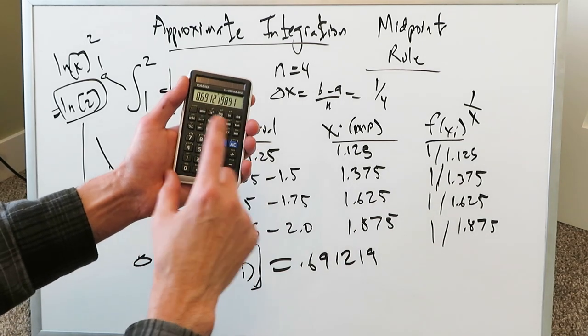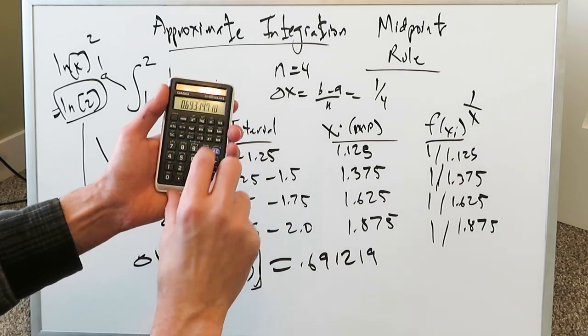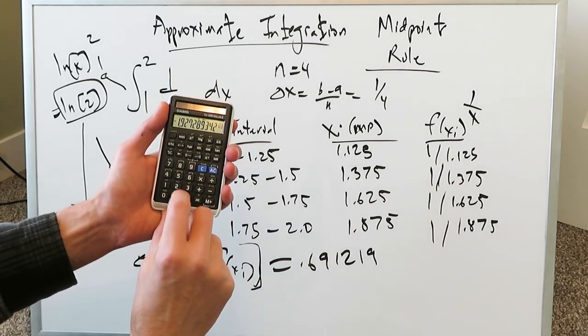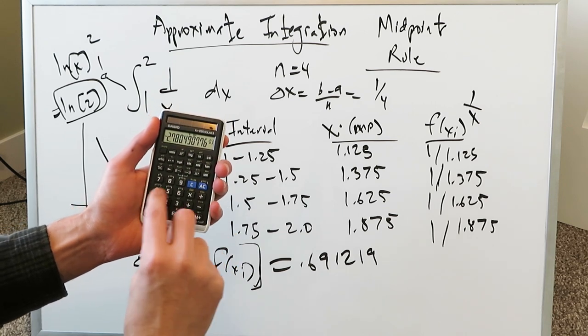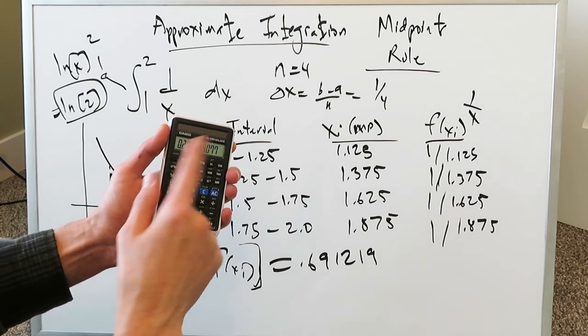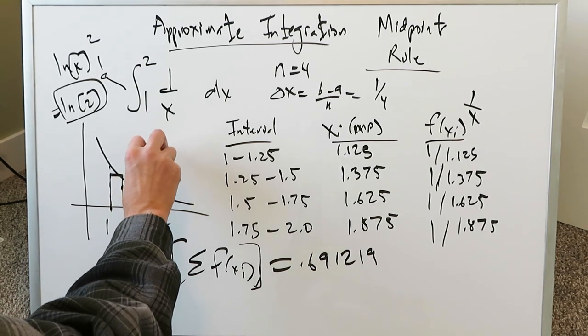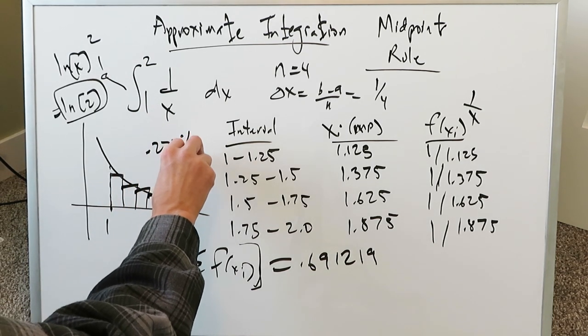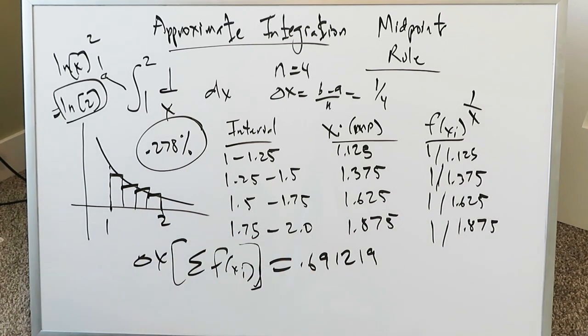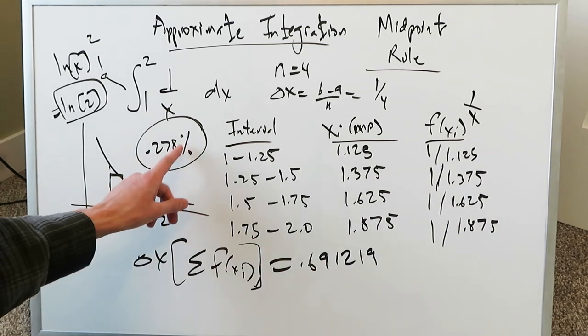We'll take this value right here. I saved it. We'll minus this from natural log 2. We'll divide that by natural log 2 and of course we can multiply by 100 and hit the absolute value. We have a 0.278. Margin of error over here is 0.278 percent. We're pretty close and this approximate integration is quite accurate. 0.278 percent.